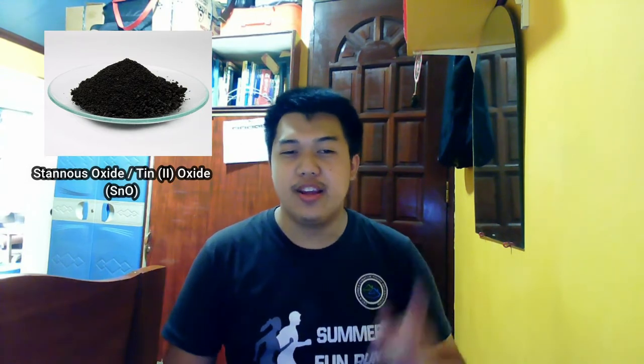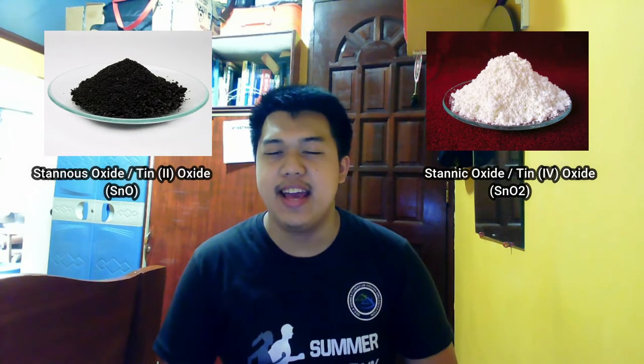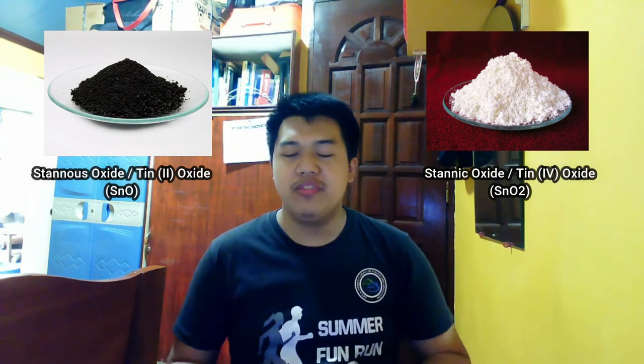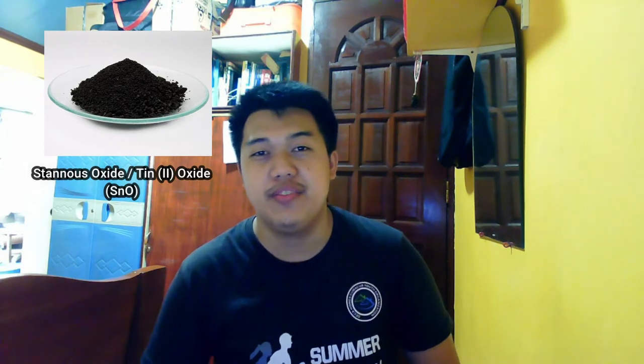The compound that we'll be using is tin oxide. There are two different types of tin oxide depending on how much oxygen is in the compound. Over here is stannous tin oxide, or SnO, and the other one is stannic tin 4 oxide, SnO2. But we'll focus only on stannous oxide and refer to it as tin 2 oxide for the rest of the video.